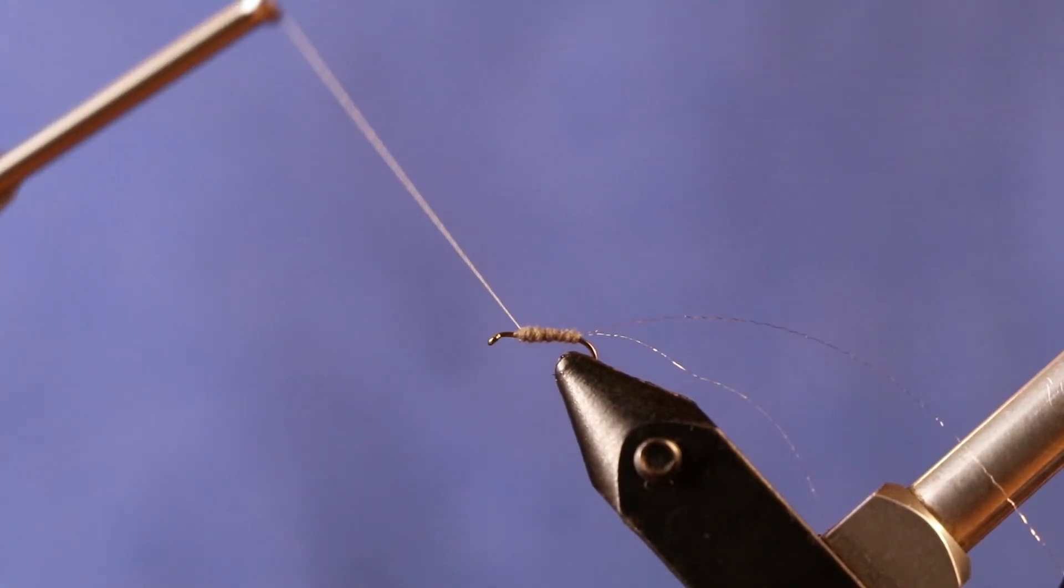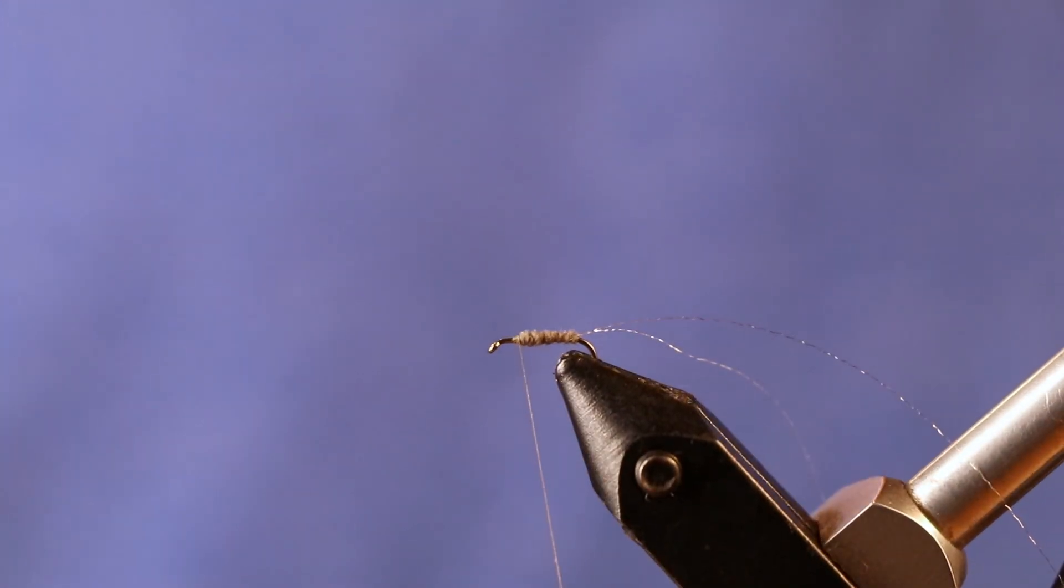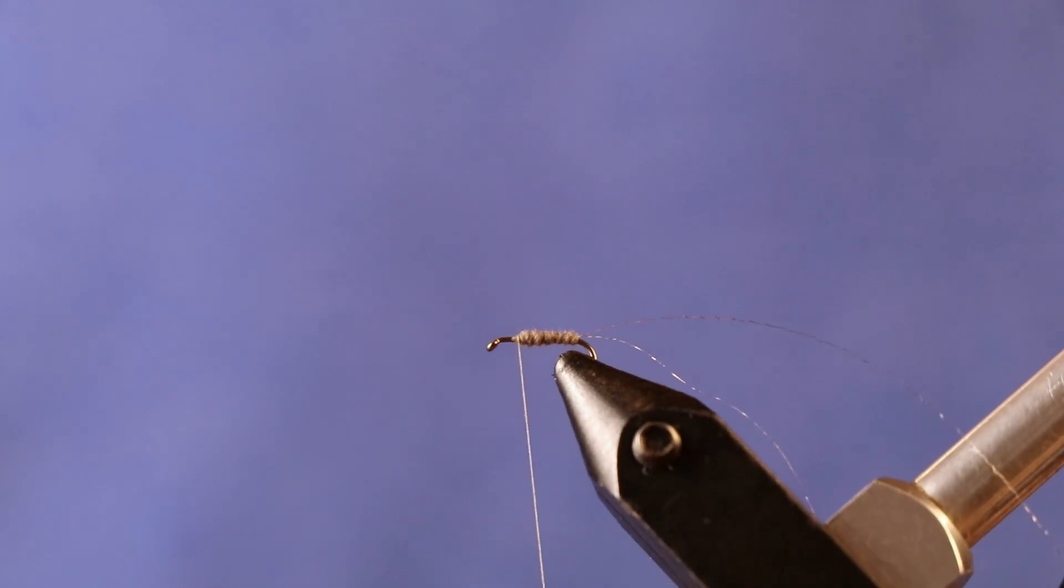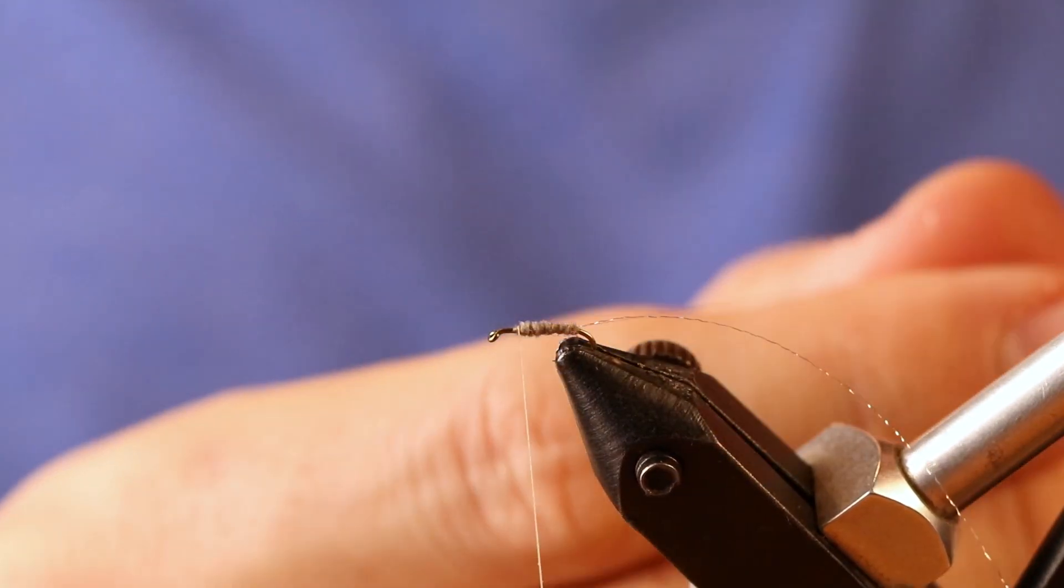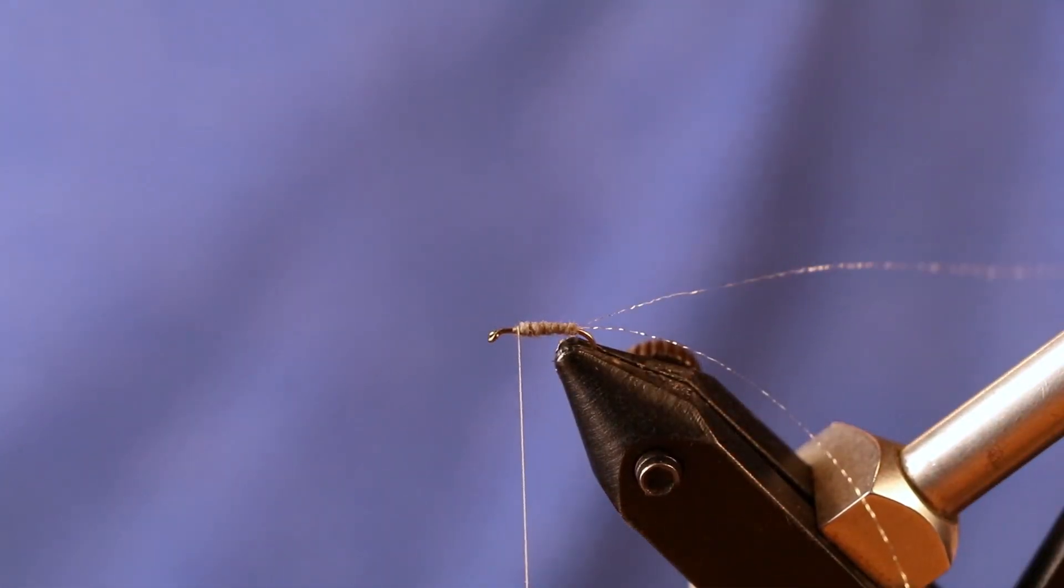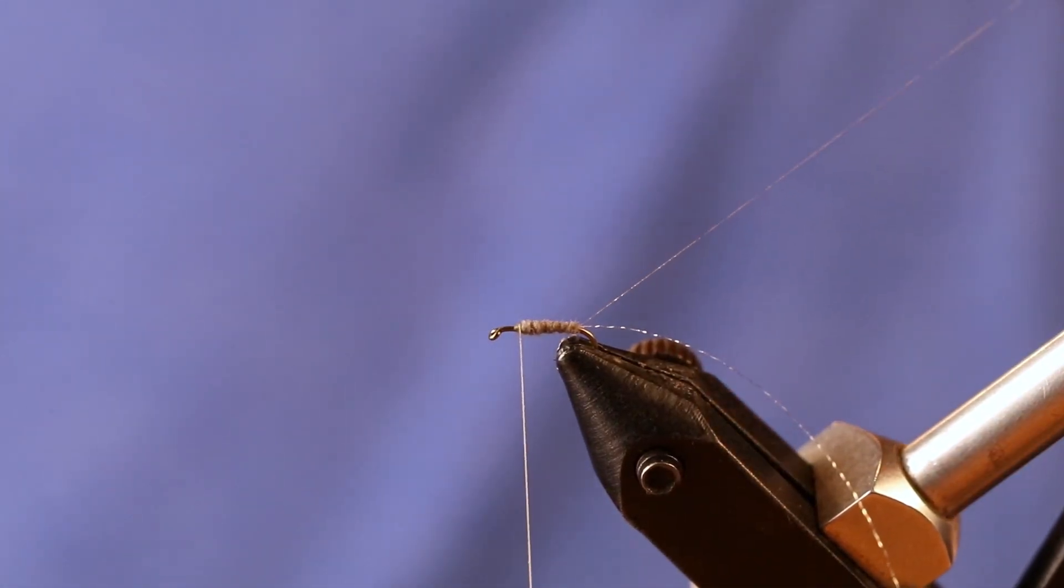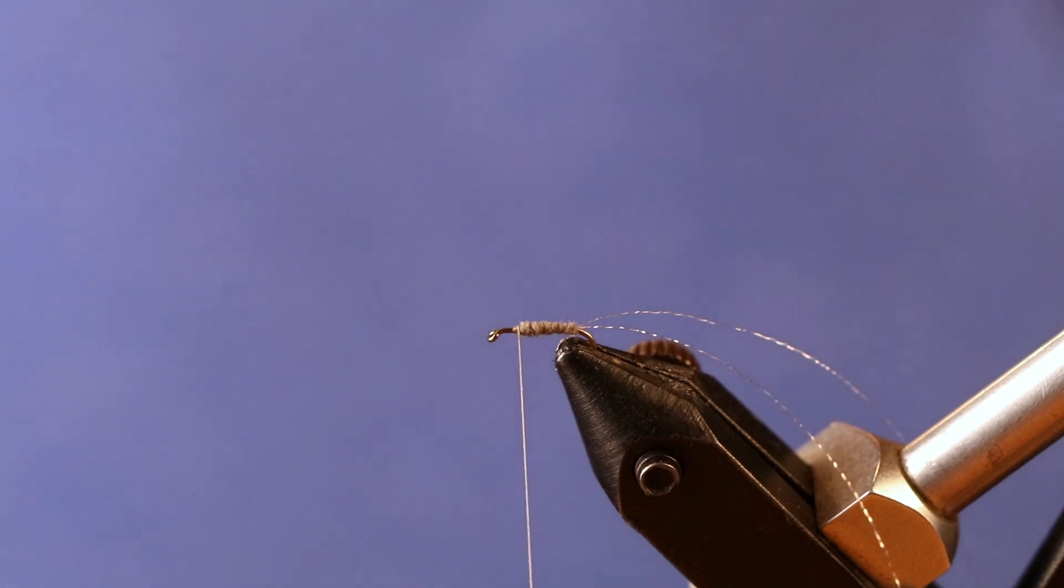Not too much. Doesn't really need to be tapered, it can be pretty straight. Make sure my tails are sitting the way I want them to sit. All right, now I can tie my wing in.